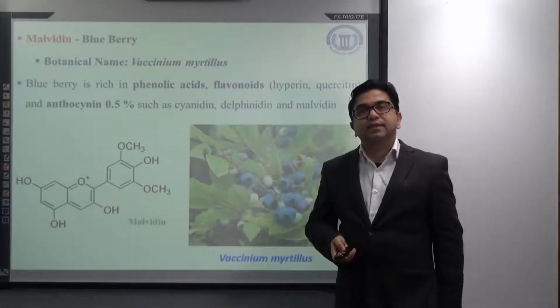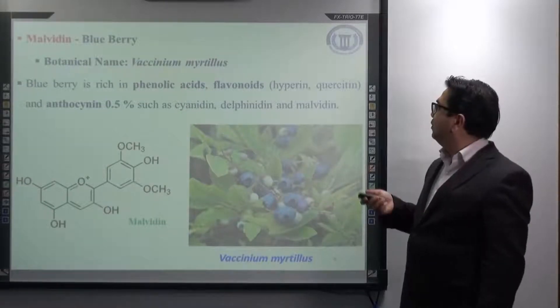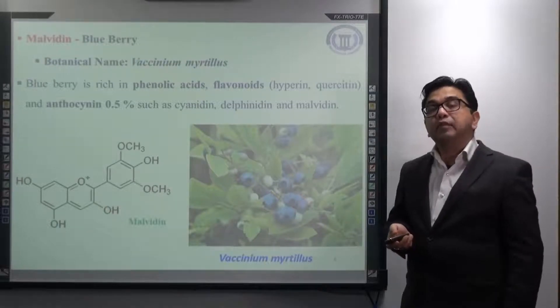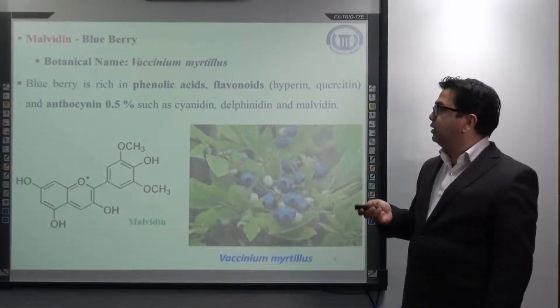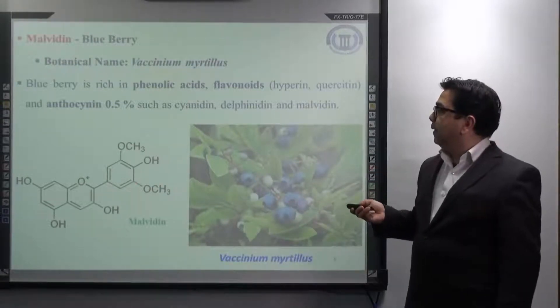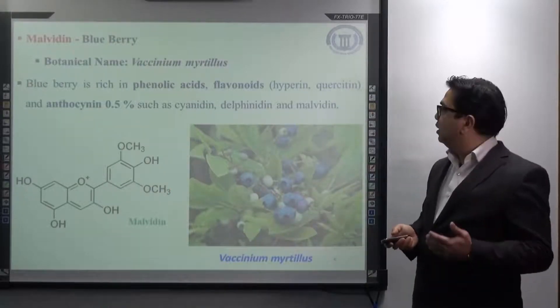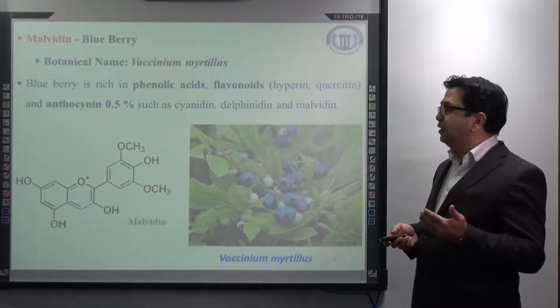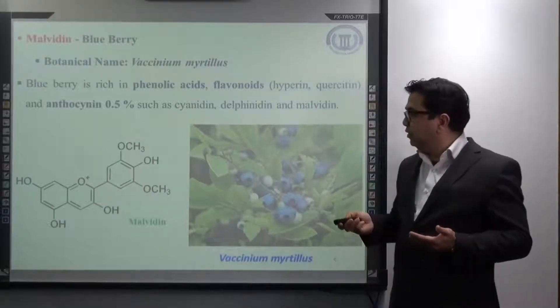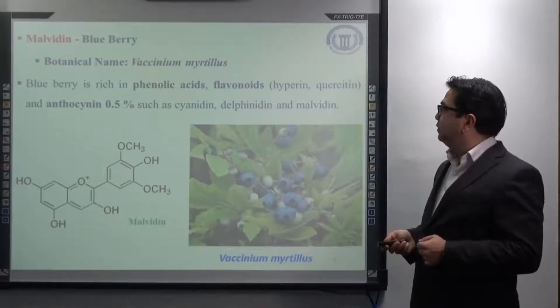Blueberry is mainly rich in phenolic acid, flavonoids, various types of flavonoids like hyperin and quercetin. They also contain anthocyanins around 0.5% such as cyanidin, delphinidin and malvidin. Even though I am talking about the presence of malvidin in blueberries, it also contains cyanidin and delphinidin. But the presence of malvidin is more compared to the other anthocyanidins.